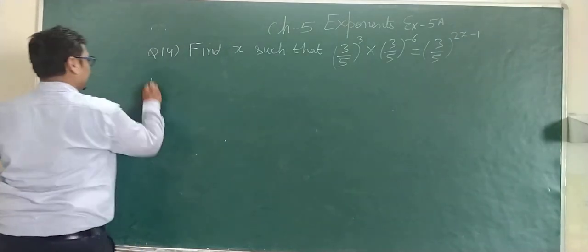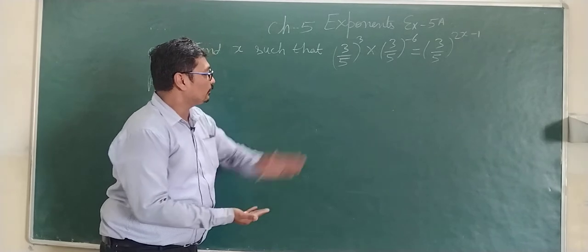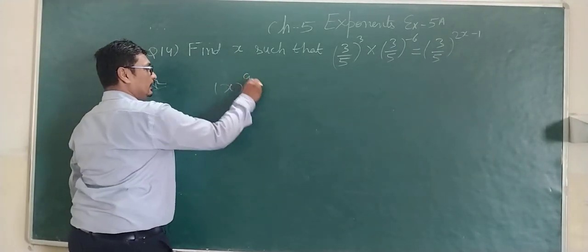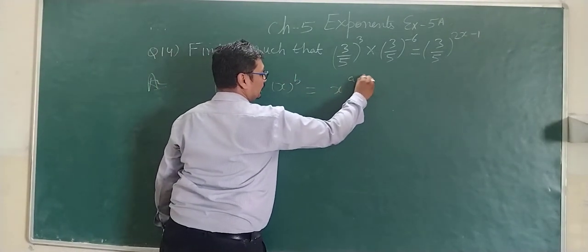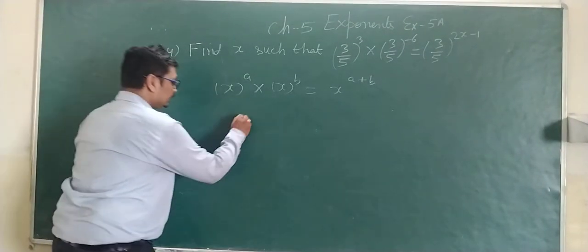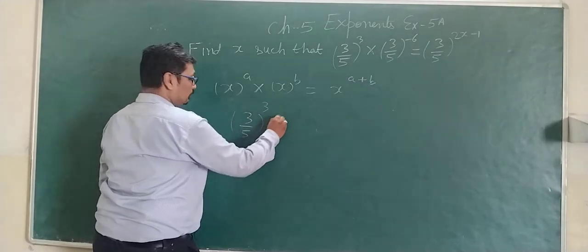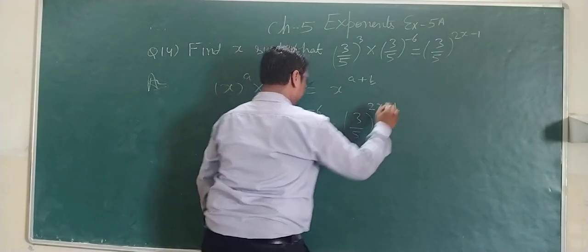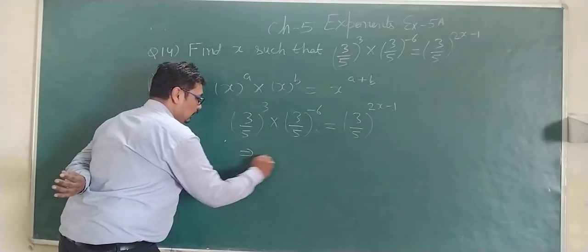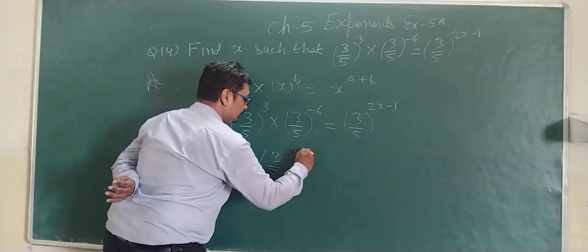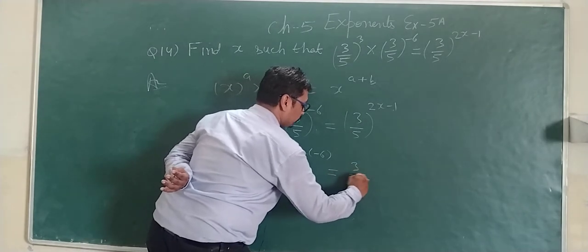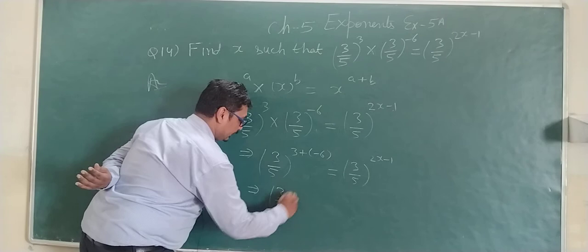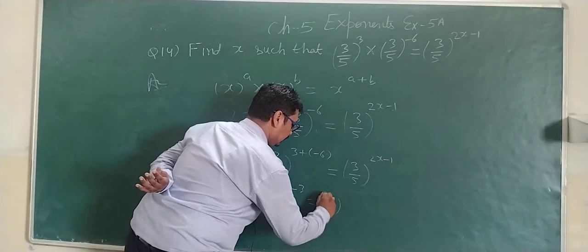Question number 14: Find x such that 3 upon 5 whole cube multiplied by 3 upon 5 power minus 6 is equal to 3 upon 5 raised to the power 2x minus 1. We know x to the power a multiplied by x to the power b can be written as x having power a plus b. So this becomes 3 upon 5 to the power 3 plus minus 6, equal to 3 upon 5 to the power 2x minus 1, giving 3 upon 5 power minus 3 equals 3 upon 5 power 2x minus 1.